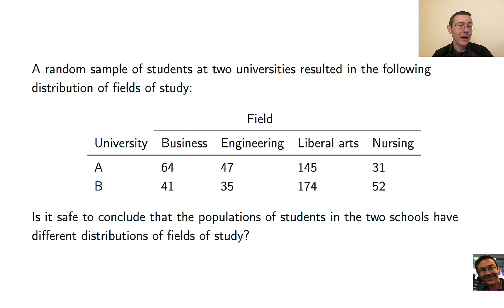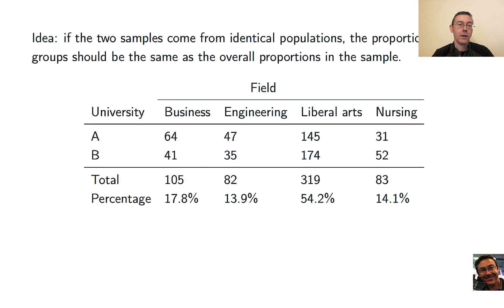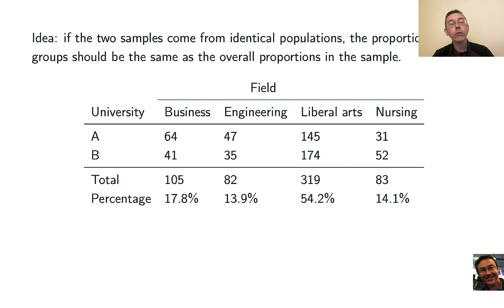The question is whether the differences in the sample are enough to give us evidence to conclude that there might actually be a difference in the population. We're going to use a chi-squared test for homogeneity here. The big idea is this: if the two samples do in fact come from identical populations, then the proportions in both groups should be the same as the overall proportions in the combined sample.